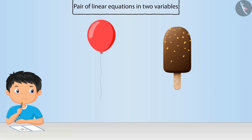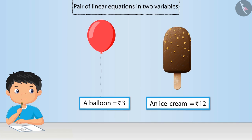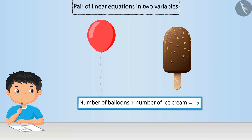But he remembers that a balloon was for 3 rupees and an ice cream was for 12 rupees. And the total number of balloons and ice cream was 19.